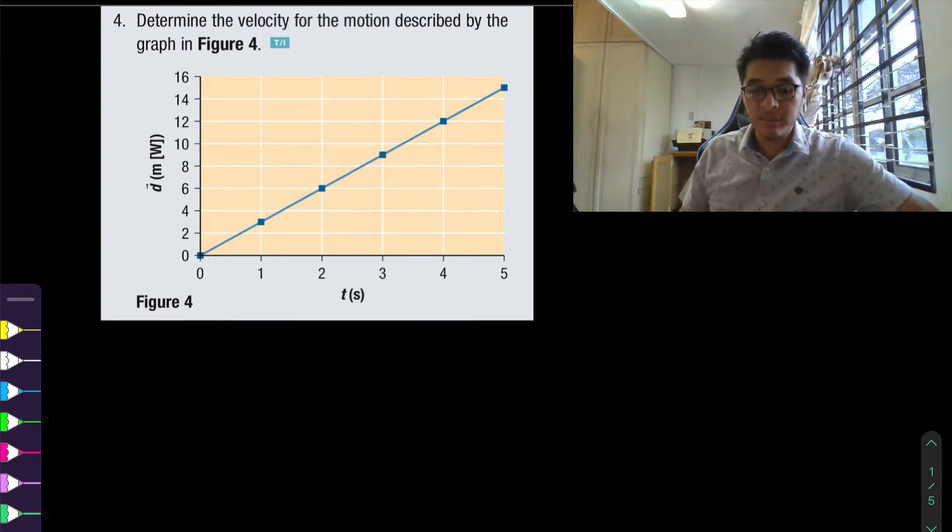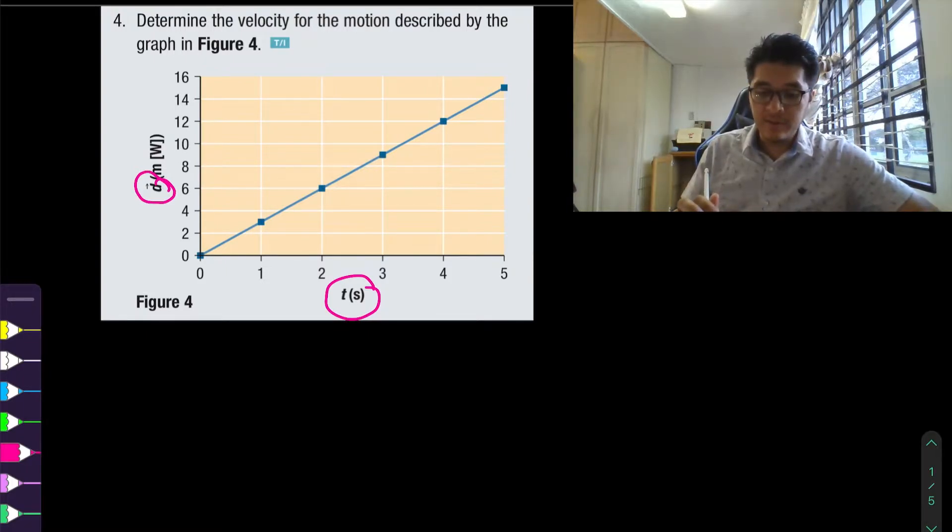The first question we're going to answer is question number four and in this question it says determine the velocity for the motion described by the graph. First thing we want to make a note of is looking at what type of graph it is. So in this case we have a position versus time graph and if you recall for a position time graph the slope gives us the average velocity but we're too lazy to say average velocity. So normally you're always going to be seeing it as just velocity.